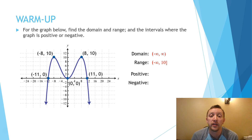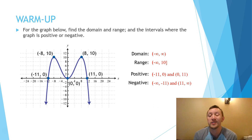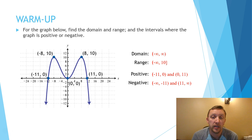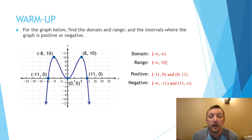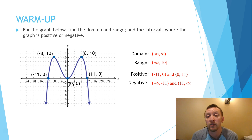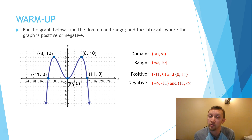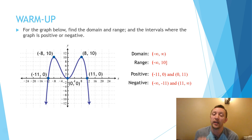Now, where is it positive and where is it negative? It's positive when it's above the x-axis, so it's positive from negative 11 to 0 and from 0 to 11. If you said it was positive from negative 11 to 11, that's wrong, because at the point (0, 0) the graph is neither positive nor negative. So those are two separate segments: negative 11 to 0, and 0 to 11. It's negative below the x-axis, from negative infinity to negative 11, and from 11 to infinity.